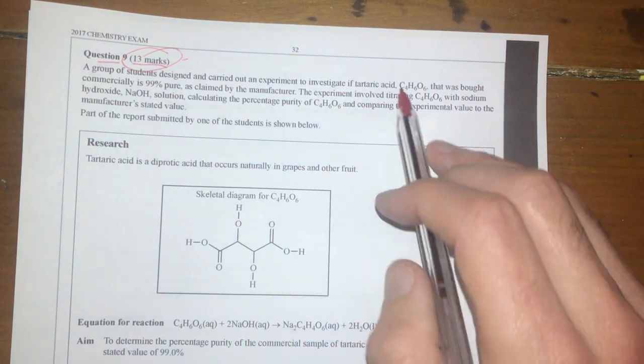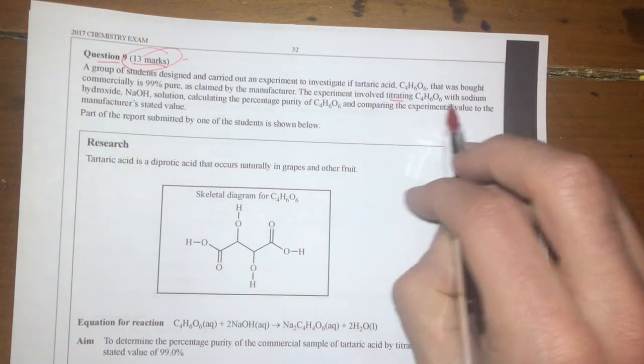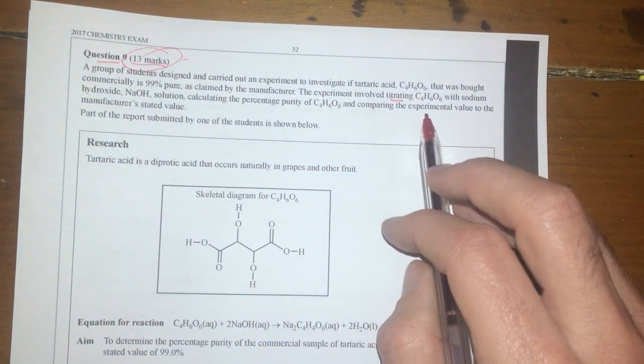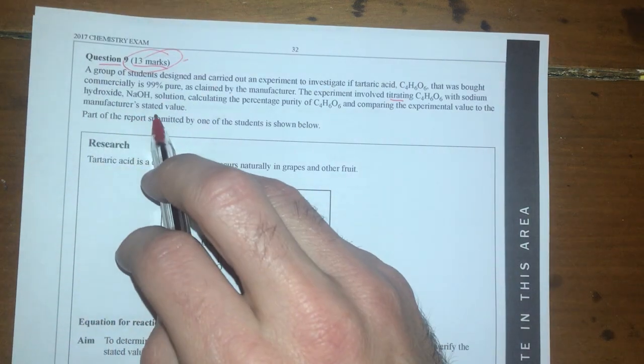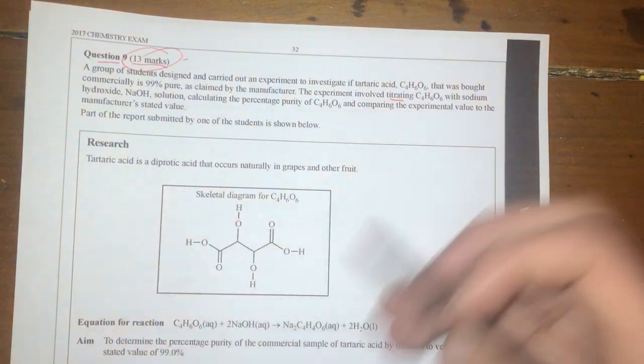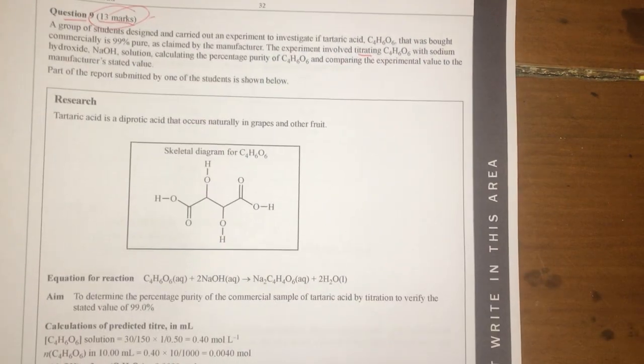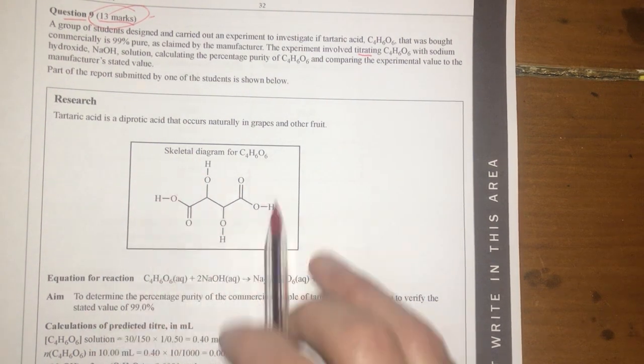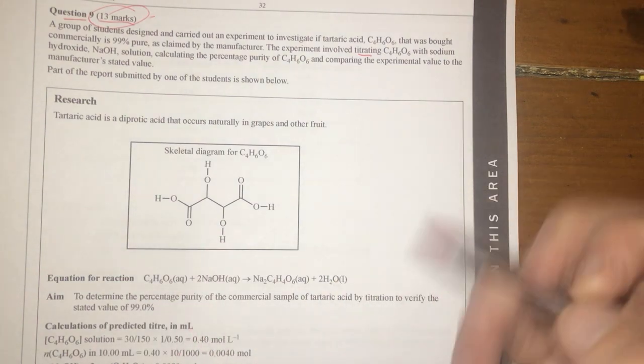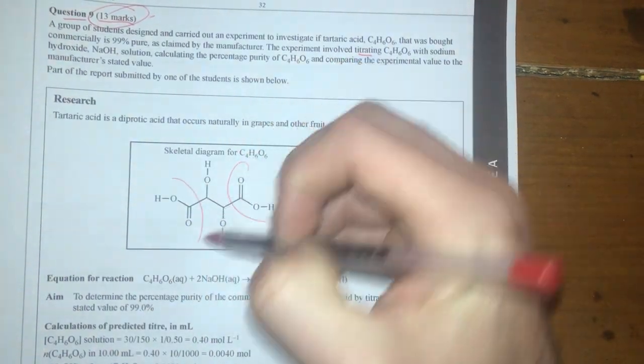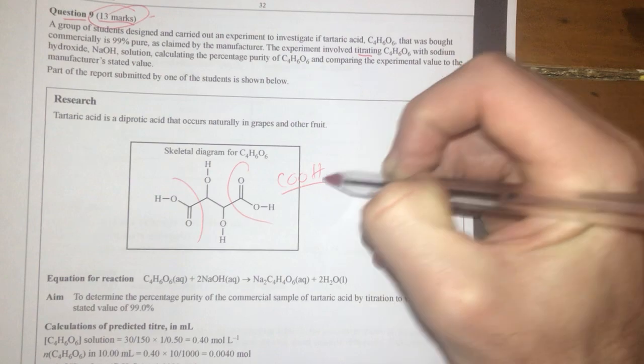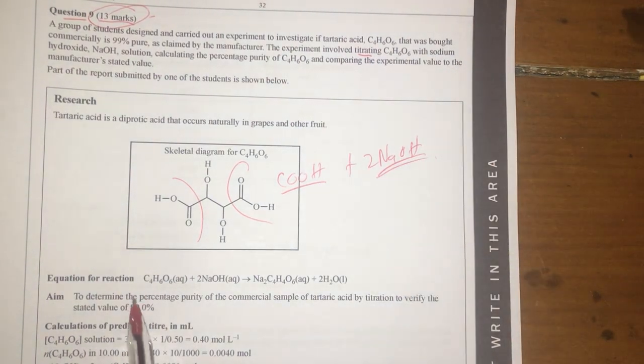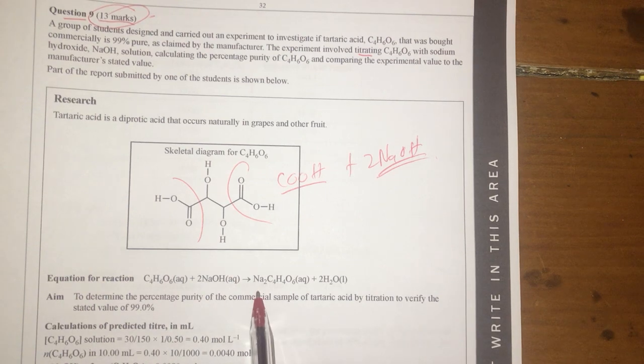The experiment involved titrating, so we're doing a titration of that with sodium hydroxide and calculating percentage purity and comparing the experimental value with the manufacturer's stated value. Here is part of the report. This is tartaric acid. Very nice introduction. One thing to note, we have two carboxyl groups, so therefore we're going to be adding in two NaOHs, hopefully. And the equation is here as well, which is good.